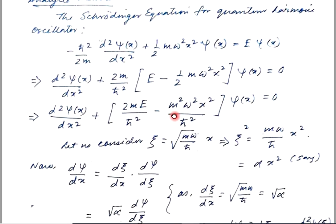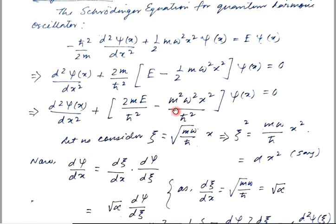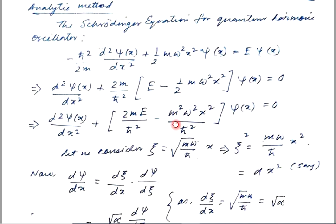To find the eigenvalue and eigenfunction, we have adopted the analytic method. There are other methods, but this is a very classical and straightforward method. Of course, this is for quantum mechanics, but the method itself is classical.